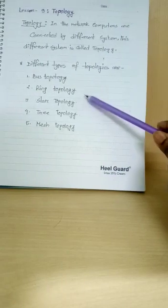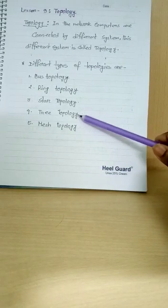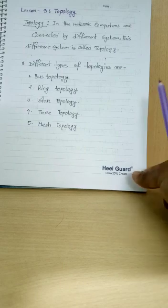I am showing here types of topology. First one is bus topology. Number 2, ring topology. Number 3, star topology. Number 4, tree topology. And last one is mesh topology.